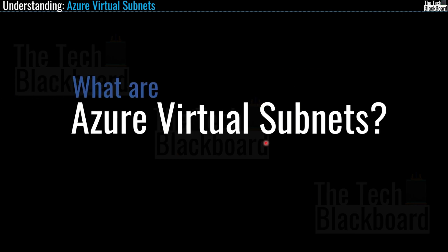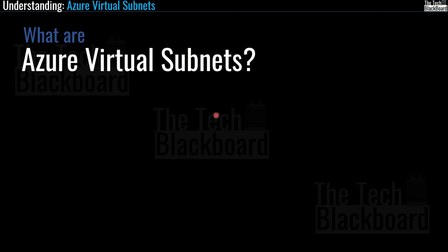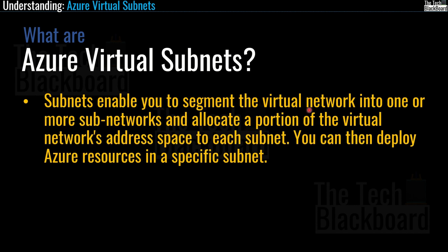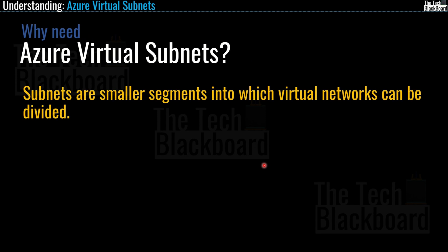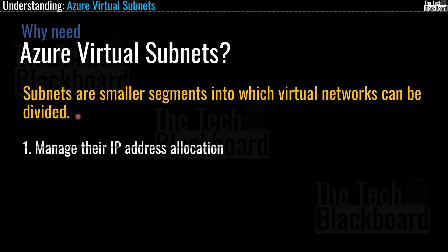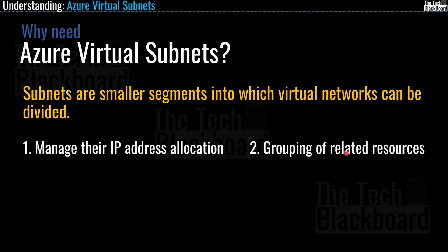Now let's understand what Azure virtual subnets are. Think of subnets as smaller parts of your Azure virtual network. A subnet enables you to segment the virtual network into one or more subnetworks and allocate a portion of your virtual network address space to each subnet, then deploy Azure resources in specific subnets. Subnets serve two main purposes: they allow customers to manage IP address allocation more efficiently, and they enable grouping of related resources so that security rules can be applied across multiple resources within the same subnet.